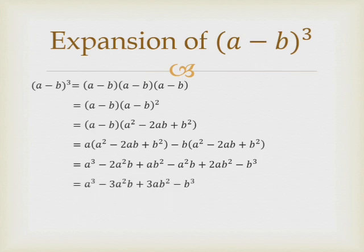Now we find the like terms. The like terms are a squared b — both are negative, so we add them: minus 2a squared b minus a squared b gives minus 3a squared b. Then ab squared terms: plus ab squared plus 2ab squared gives plus 3ab squared. So the result is a cubed minus 3a squared b plus 3ab squared minus b cubed.